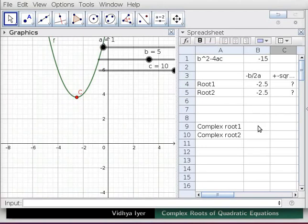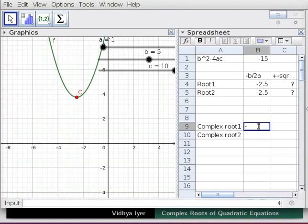In cell B9 type -b/(2*A) and press enter. In cell B10 type B9 and press enter. 1.94 appears in C9. For Fx = x² + 5x + 10.